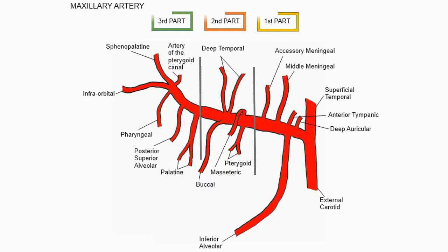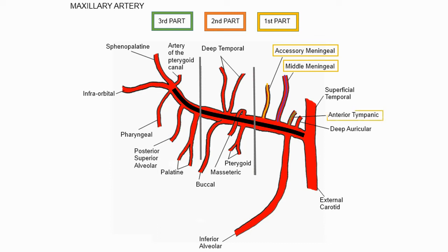The maxillary artery is divided into three parts. The first part has five branches: the accessory meningeal artery, middle meningeal artery, anterior tympanic artery, deep auricular artery, and inferior alveolar artery.